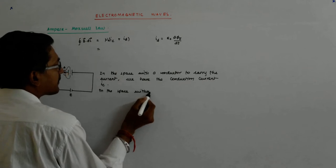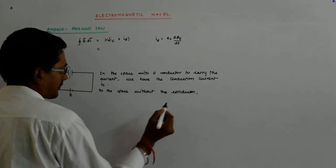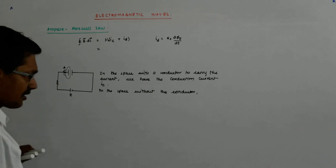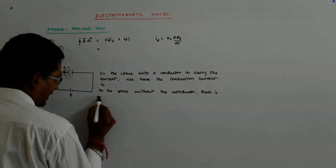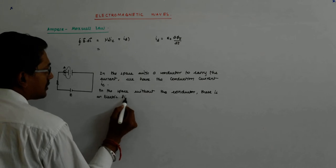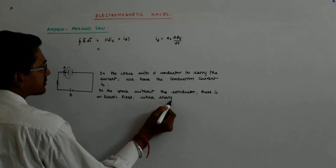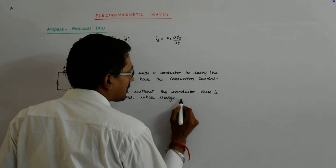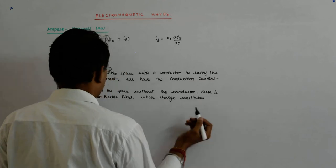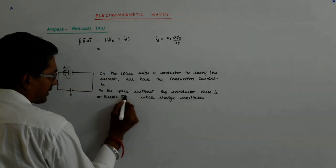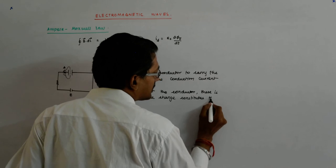So in the space without the conductor, what happens? There is an electric flux, whose change constitutes the displacement current.